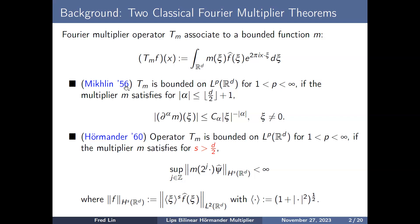In 1956, Mikhlin first established a multiplier theorem: T_m is bounded on L^p for p between 1 and infinity if the multiplier satisfies the following bound for multi-index alpha less than l, where l is the least integer larger than one-half of the dimension. This condition roughly tells us that m behaves like a homogeneous function of degree zero, with the only singularity at the origin.